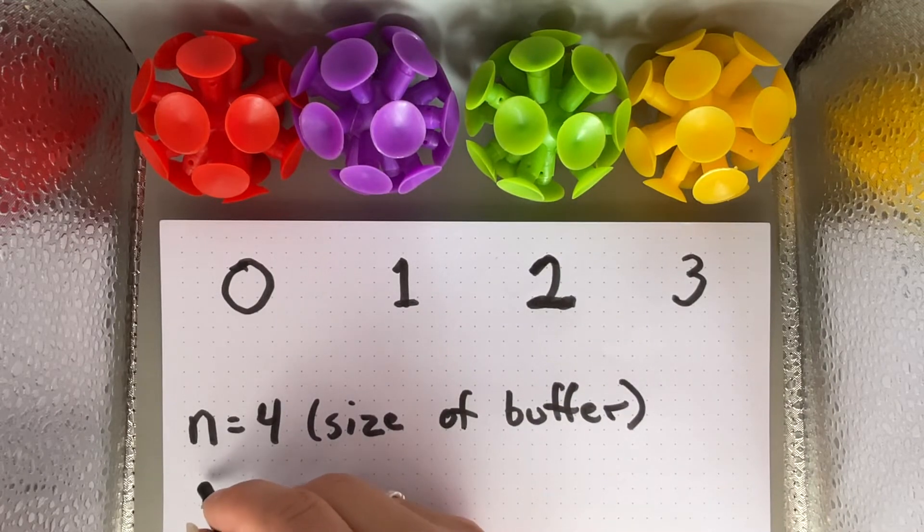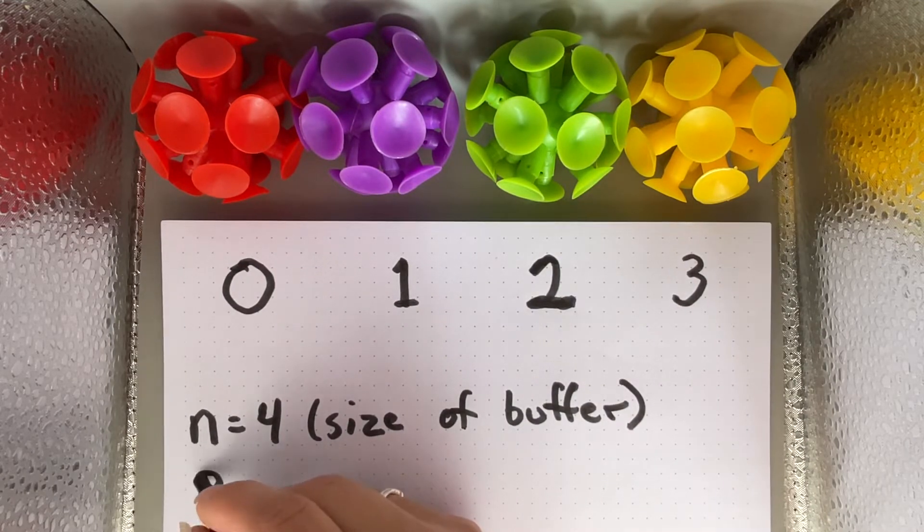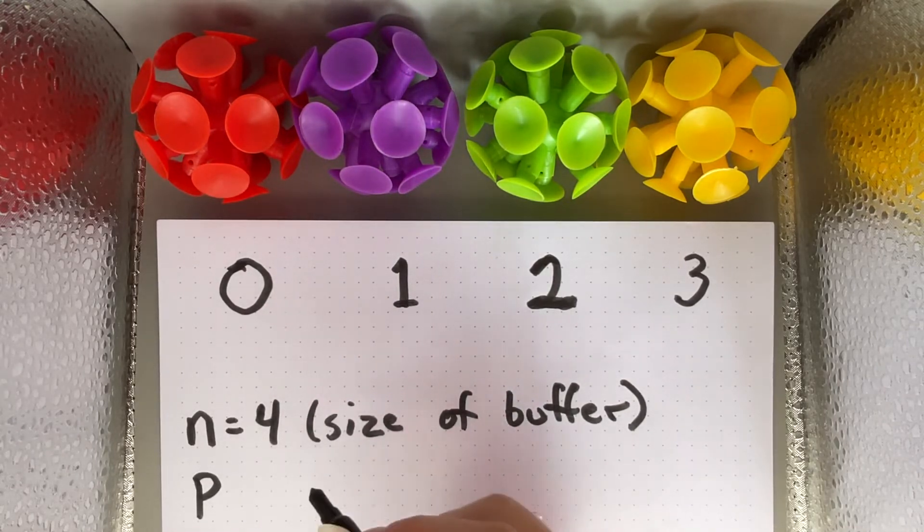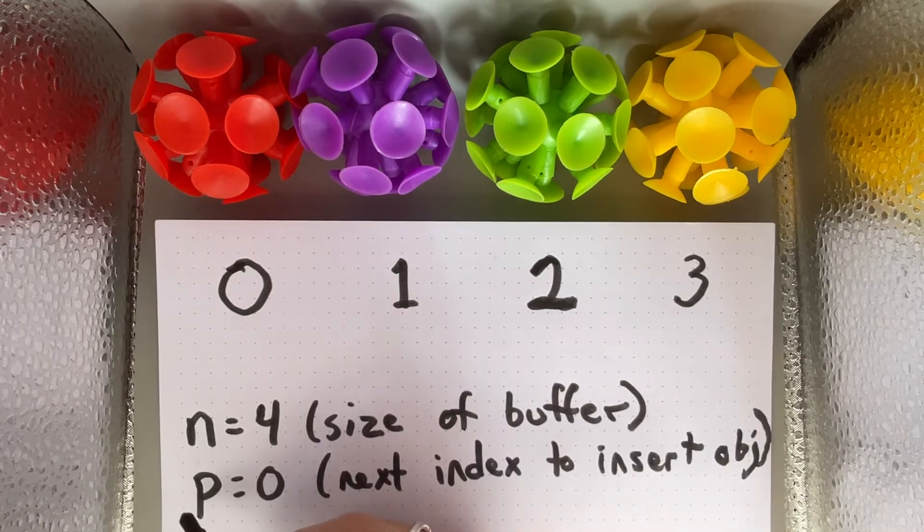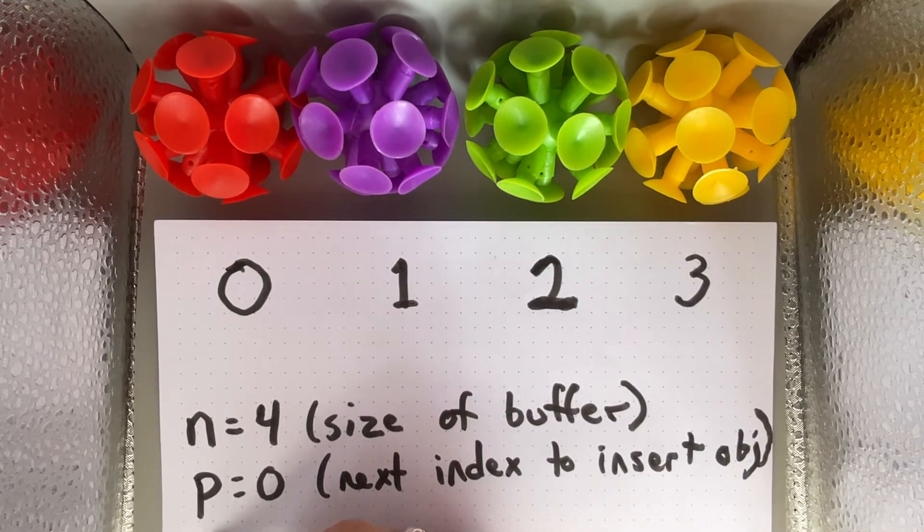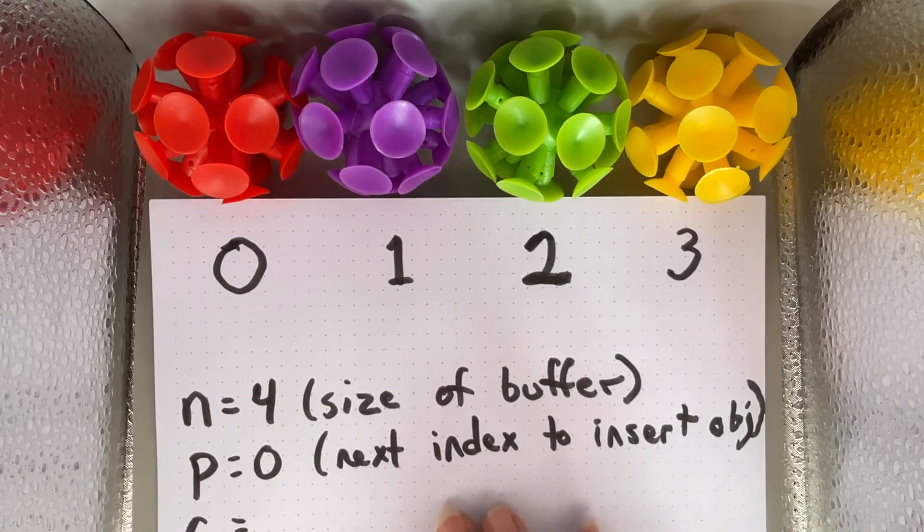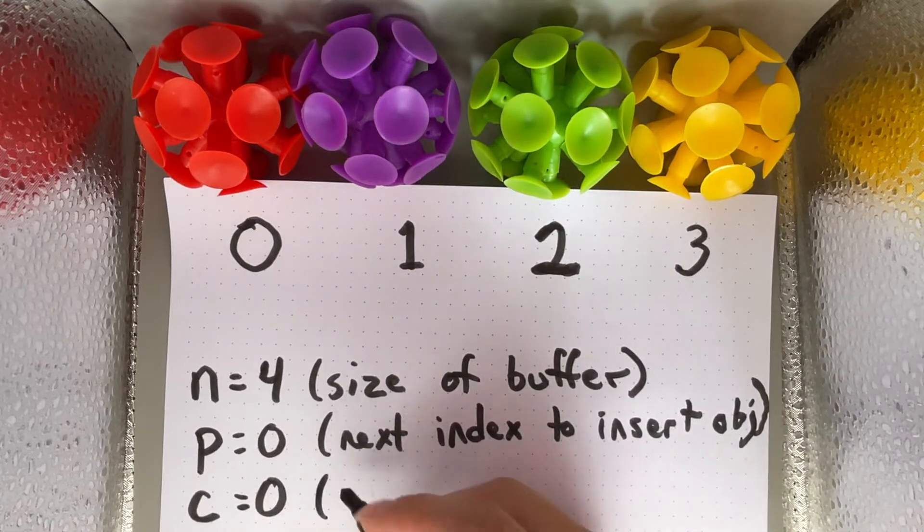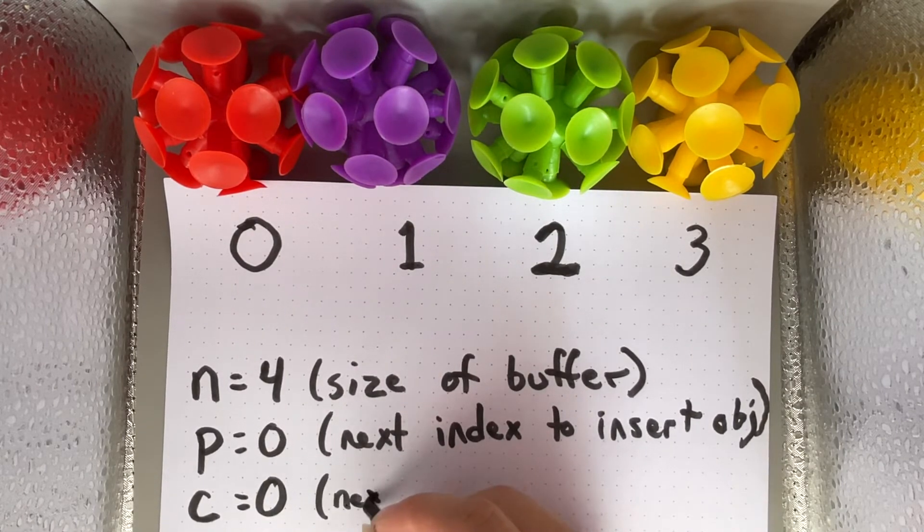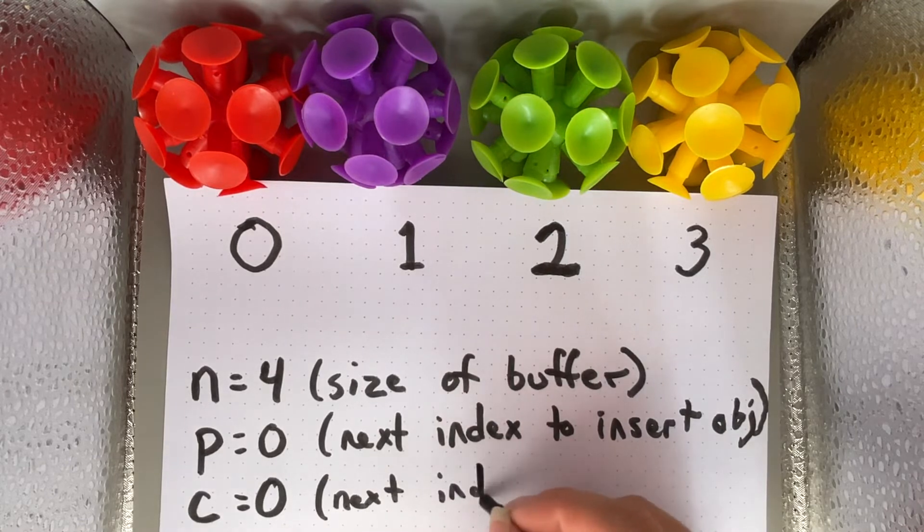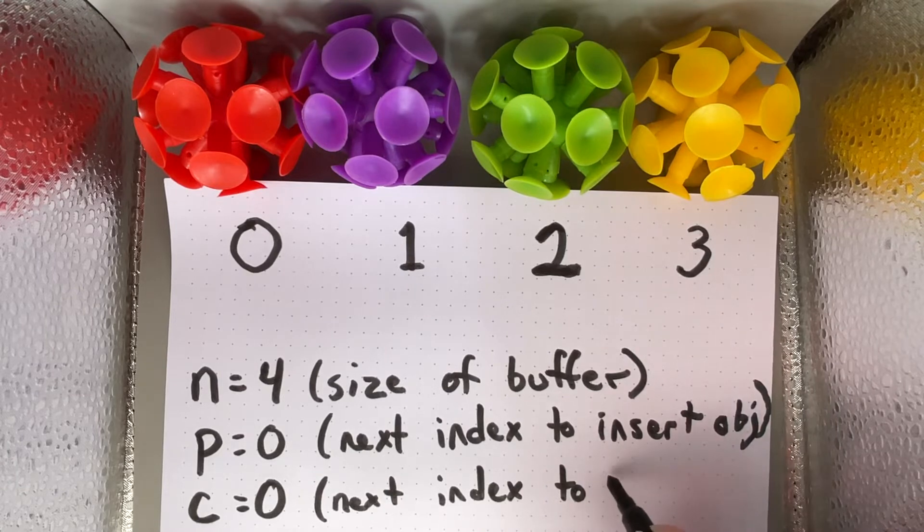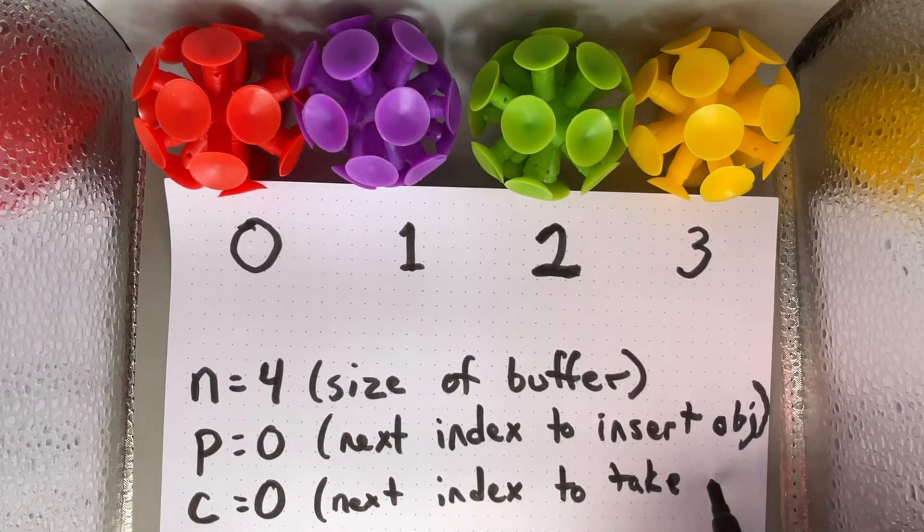We also have variable p for the next index to insert an object, and last we have c, which also starts at 0. This is the next index to take out an object.